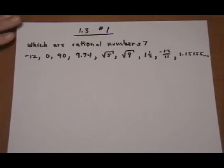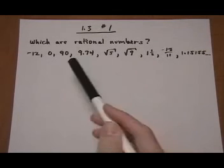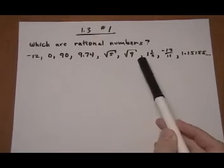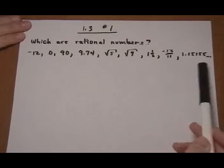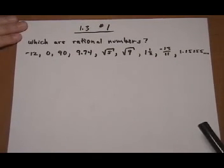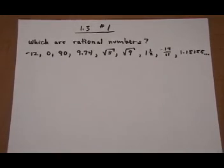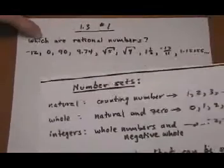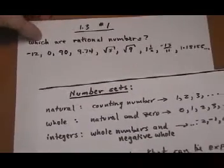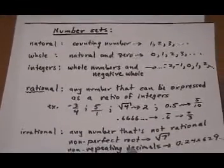Section 1.3, number 1. Here we're asked to figure out which numbers from the following list is a rational number. Before we do that, let's talk a little bit about what the different number types are, because this problem messes up a lot of students. I want to make sure you're all pretty clear on what the number sets are in the first place.